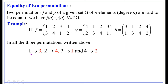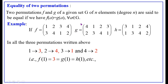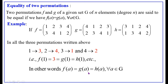Also let h be the permutation with first row 3 1 2 4 and second row 1 3 4 2. In all three permutations, 1 goes to 3, 2 maps to 4, the image of 4 is 2. So in all three permutations the image of each and every element is the same. That is, f(1)=3, g(1)=3, h(1)=3; f(2)=4, g(2)=4, h(2)=4; f(3)=1, g(3)=1, h(3)=1. In other words, f(a)=g(a)=h(a) for all a in G, and hence these three permutations f, g, and h are all equal.